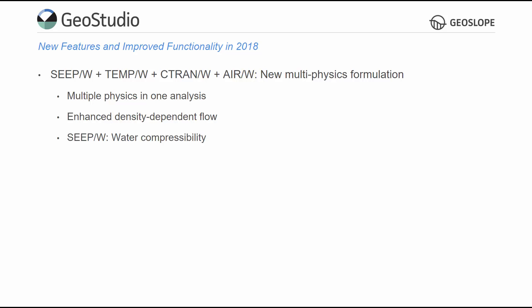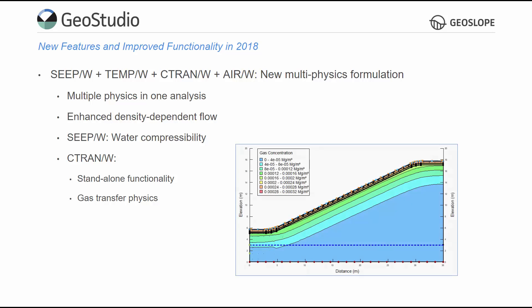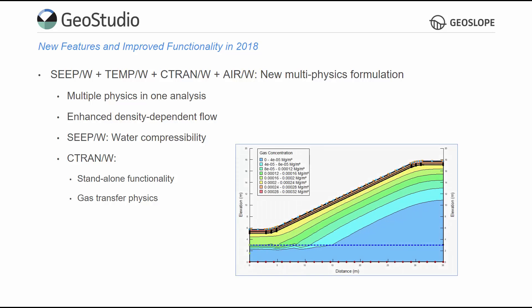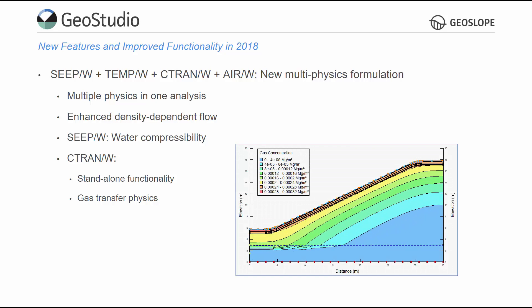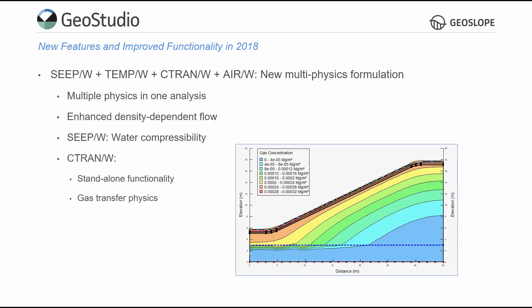SeepW now includes the compressibility of water in its formulation. The multi-physics solver has a more rigorous formulation for contaminant transport and includes a new diffusion-only analysis type, allowing CTRAN-W to run as a standalone product. Gas transfer physics are also available in CTRAN-W, such that the movement of both dissolved solutes and free gases may be analyzed.